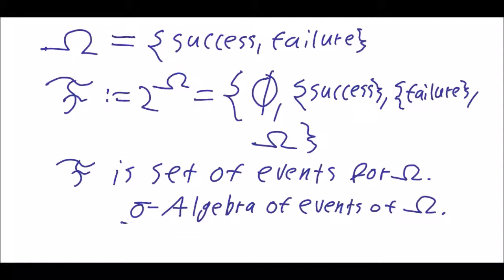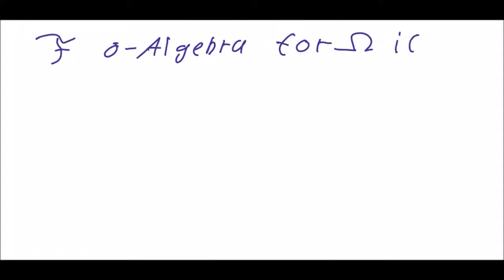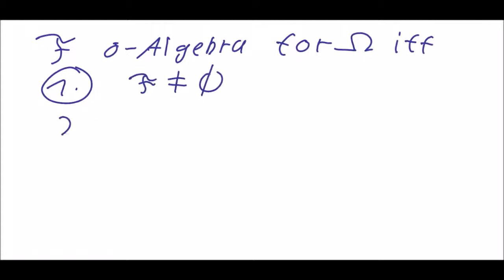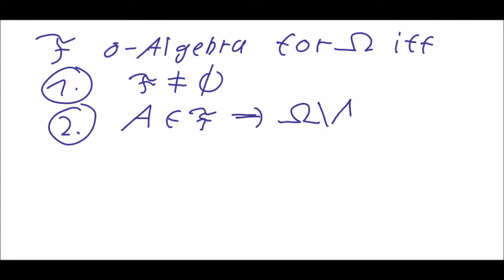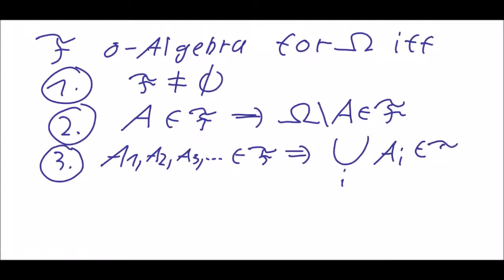We call F a sigma algebra for Omega if: first, F is not empty; second, if an event A is in F, then the complement Omega minus A is also in F — this is the counter event; and third, if you have several events A1, A2, A3, and so on in F, then their union is also a member of F. If these three conditions are fulfilled, then F is a sigma algebra.